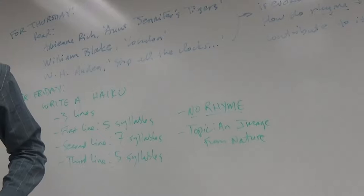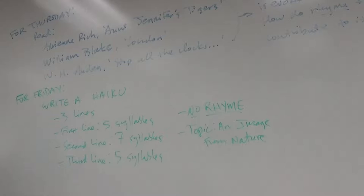For Friday, we talked a little bit about this last time, but here are the more explicit directions. I want you to write a haiku. So a haiku is a fairly simple Japanese poem that is concentrated on a single image. The form is very simple. Three lines: first line, five syllables; second line, seven syllables; third line, five syllables. No rhyme.